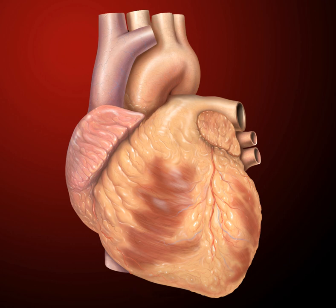Major congenital heart defects are often picked up in childhood, shortly after birth, or even before a child is born, e.g. transposition of the great arteries, causing breathlessness and a lower rate of growth. More minor forms of congenital heart disease may remain undetected for many years and only reveal themselves in adult life, e.g. atrial septal defect.